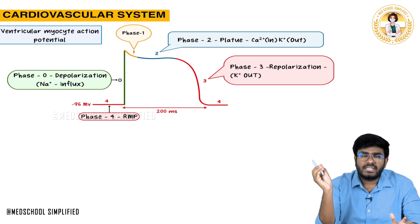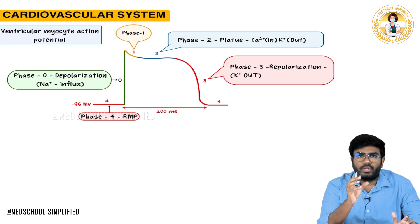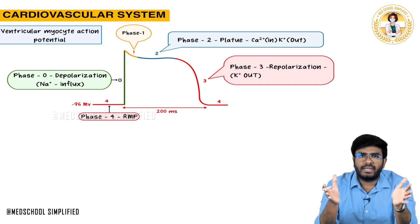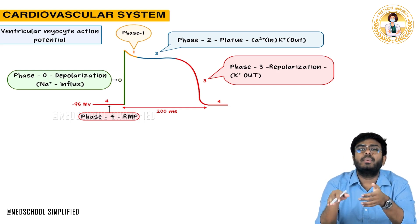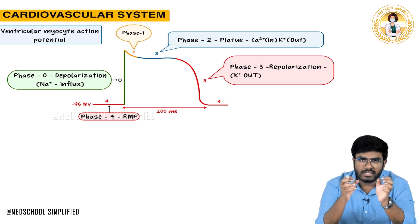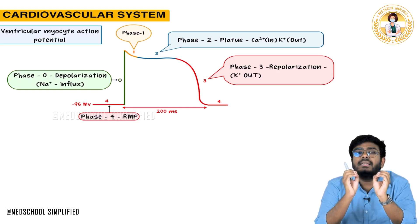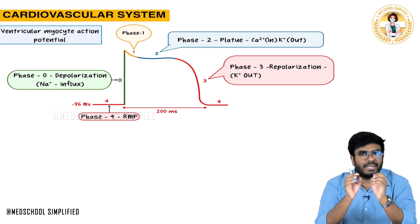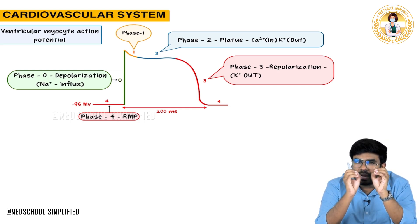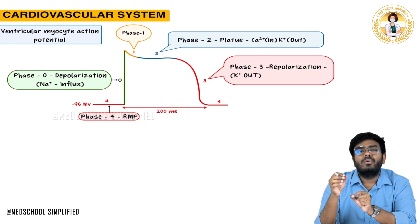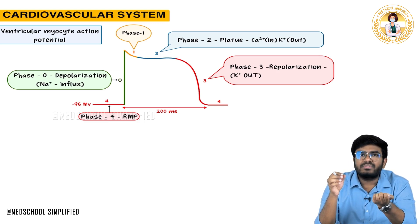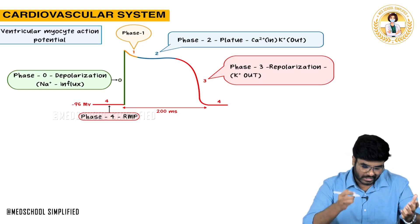Whenever the action potential comes from the SA node, it gets distributed from the SA node to the AV node, from the AV node to the bundle of His, from the bundle of His to the right bundle branch, left bundle branch, and then the Purkinje fibers. Now the action potential hits the ventricular myocytes, and they get activated and undergo depolarization.